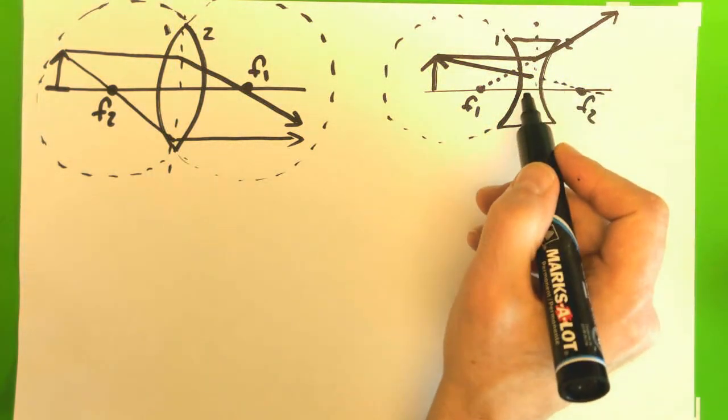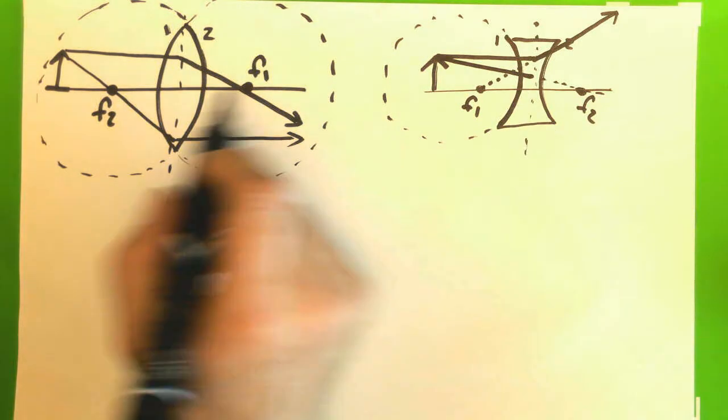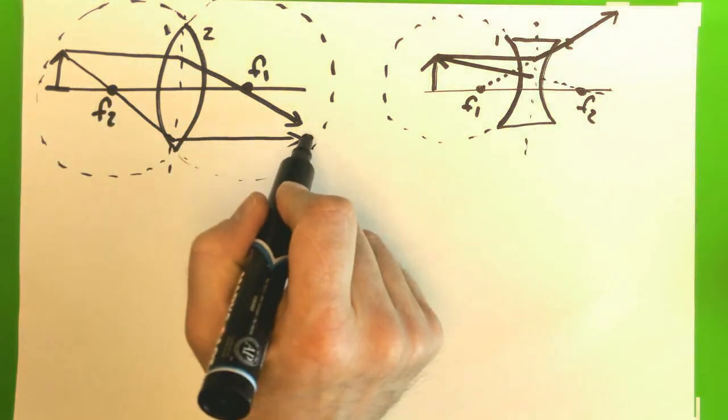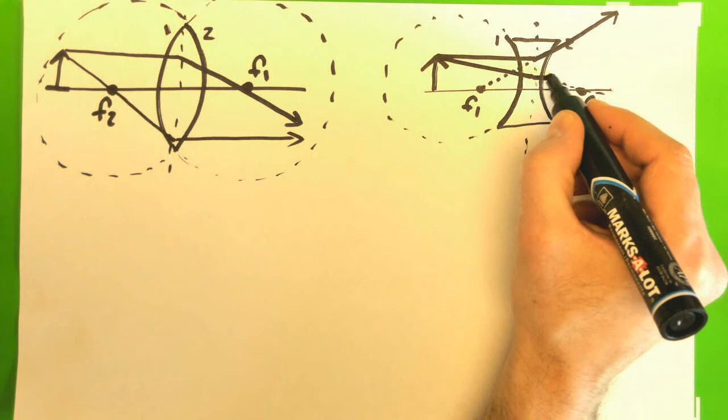So it's as if it's going to go towards it. But it hits this lens, and then what happened over here? Well, it comes out straight. So this one comes out straight too.